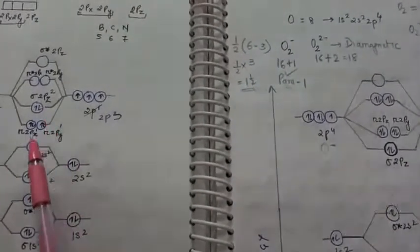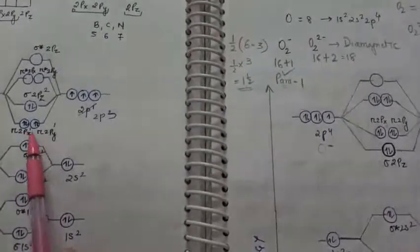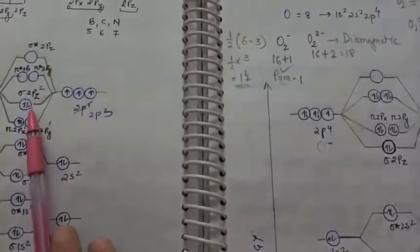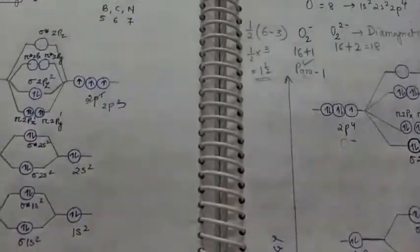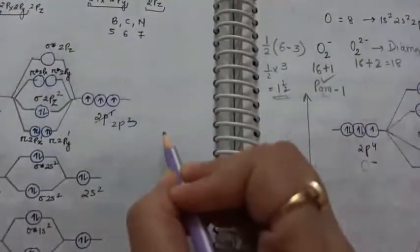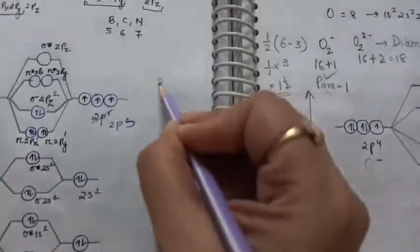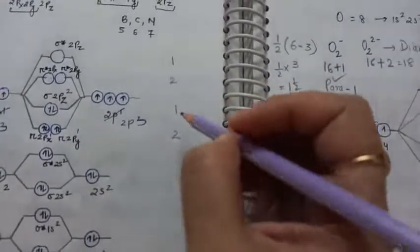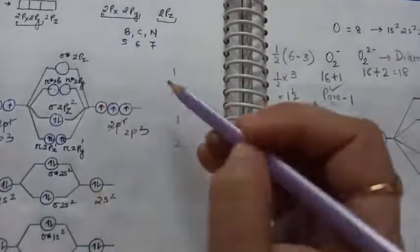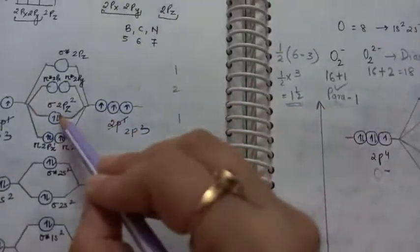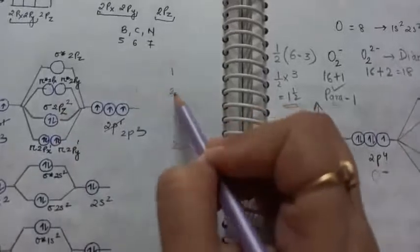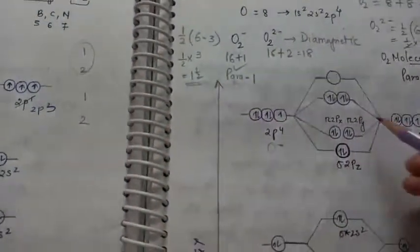then just see this is for boron, carbon, nitrogen. Two are drawn here and one is drawn here. In the previous videos, I gave a trick that you can remember: in boron, carbon, nitrogen, it is like 2,1, 2,1. It means that p orbitals px, py are drawn at the lower and z is drawn at the upper. This is the same here also.